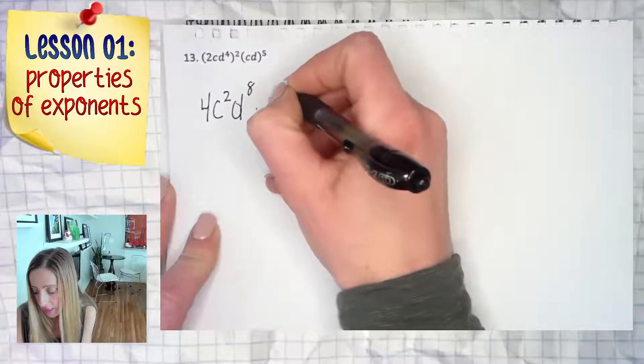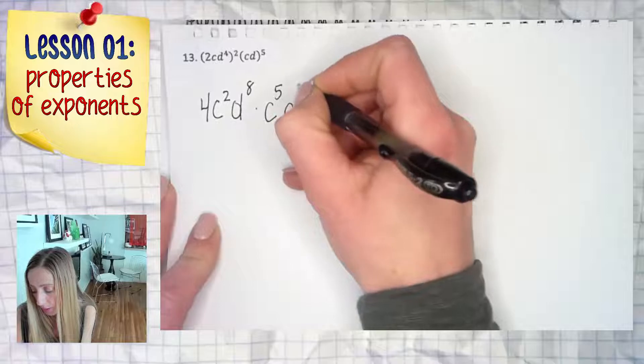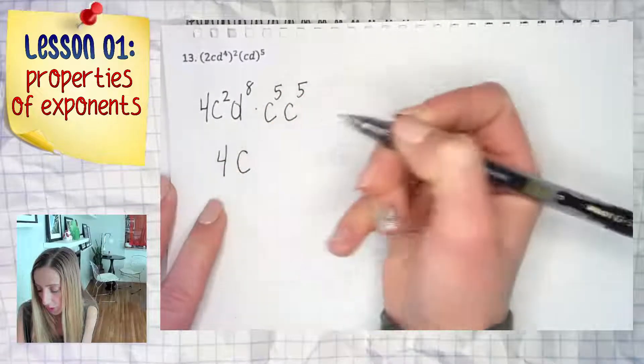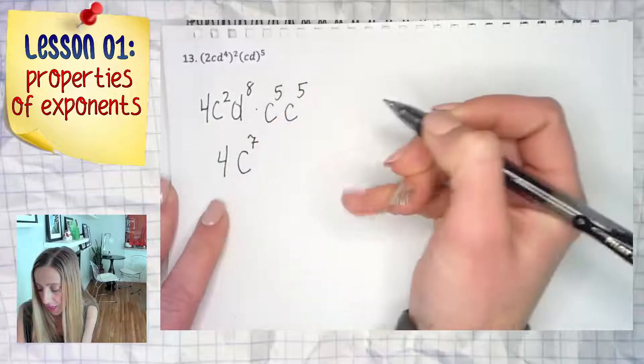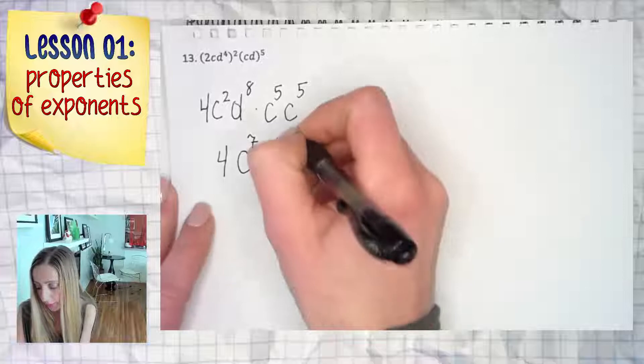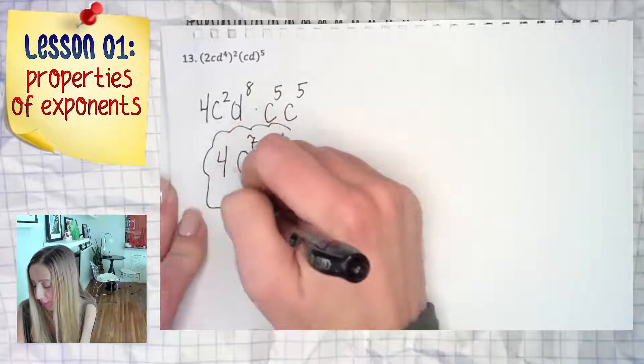And then, just to finalize everything, you should have 4 times c to the seventh power times d to the thirteenth power. And that's all there is to it for number 13.